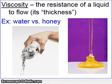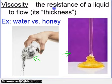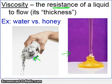Viscosity is how thick a liquid is — defined as the resistance of a liquid to flow. Water has a low viscosity, so there's not much resistance to flow. Honey has a very high viscosity, with a lot of resistance to flow, which is why it's so thick.